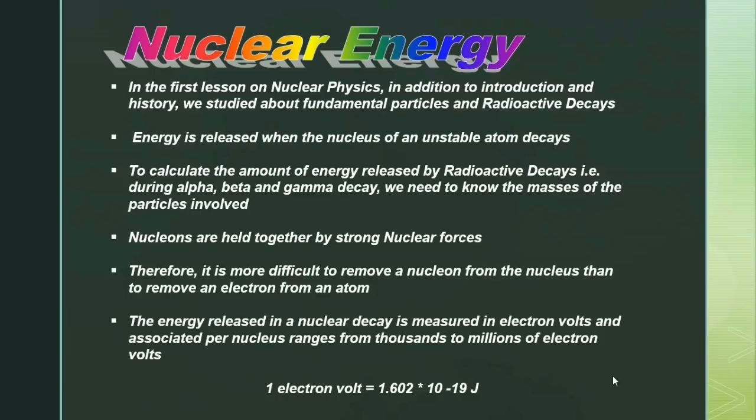Nucleons are held together by strong nuclear forces, therefore it is more difficult to remove a nucleon from the nucleus than to remove an electron from an atom. The energy released in a nuclear decay is measured in electron volts, and the energy associated per nucleus ranges from thousands to millions of electron volts.